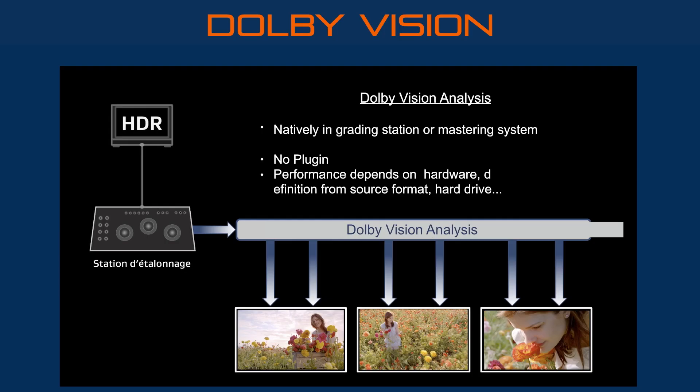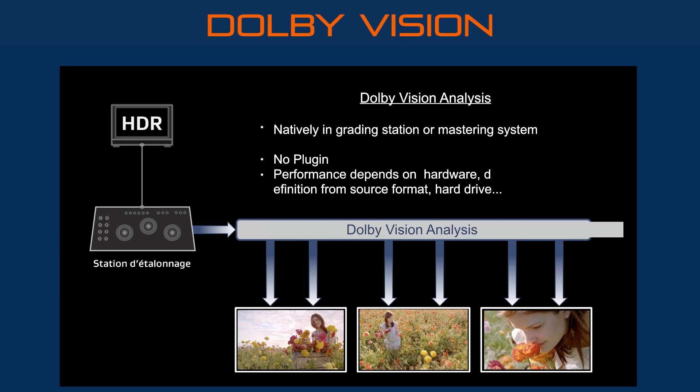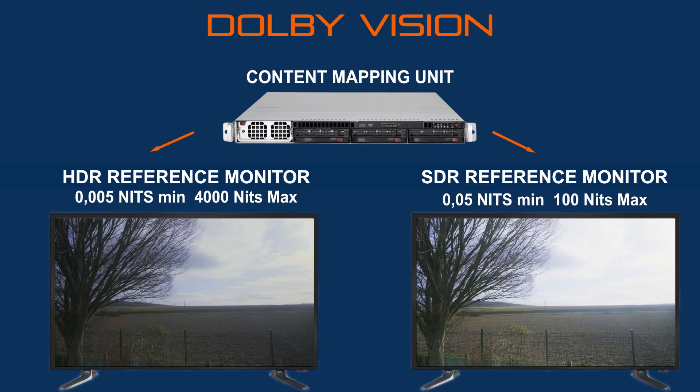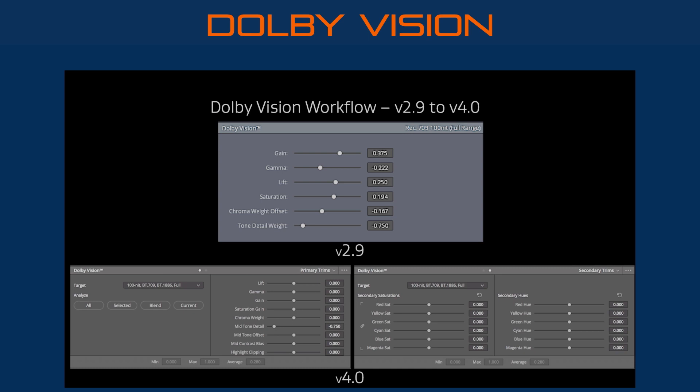Once color grading is finished, there is a process called Shot Analysis where all shots are analyzed and an SDR version is made. Dolby offers a unit called the Content Mapping Unit, or CMU, able to display the signal on an HDR screen and simultaneously convert it to SDR for an SDR screen. Dolby provides the CMU tool to make the SDR content match the HDR content as much as possible. During signal mastering, the metadata is created, containing a lot of information — and more precisely, there are different levels of information in Dolby's metadata.